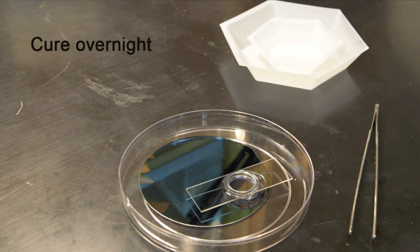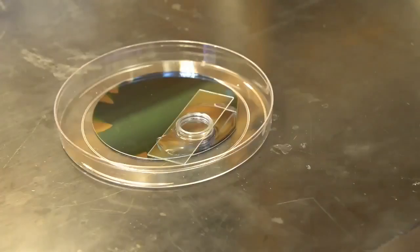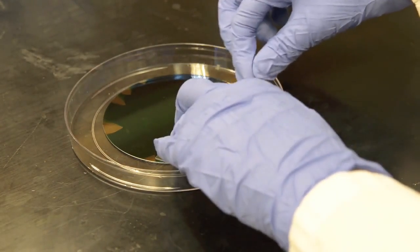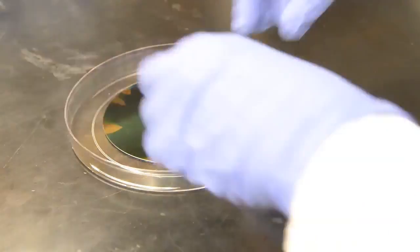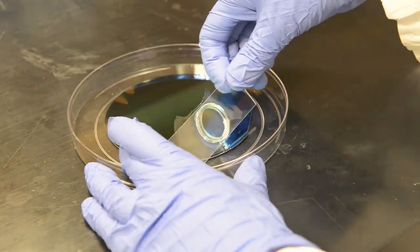Cure the assembly overnight on a flat surface. Once cured, carefully peel the excess PDMS from the wafer. Remove the stamp and be careful not to scratch the patterned area on the wafer.